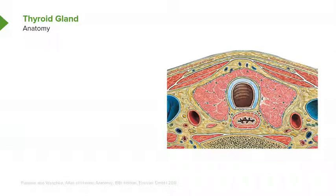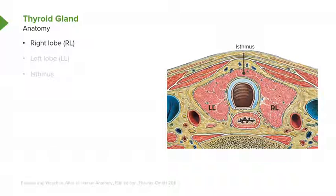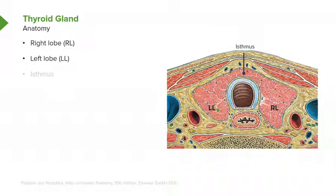Here we begin with the thyroid. What I want you to understand here at the beginning is some really basic anatomy. The thyroid is made up of lobes. Here we see the right lobe. Next, we have the left lobe. And lastly, both lobes are connected by an isthmus.